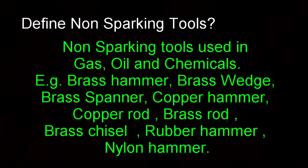Define non-sparking tools. Non-sparking tools are used in gas, oil, and chemical environments. Examples include brass hammer, brass wedge, brass spanner, copper hammer, copper rod, brass rod, brass chisel, rubber hammer, and nylon hammer.